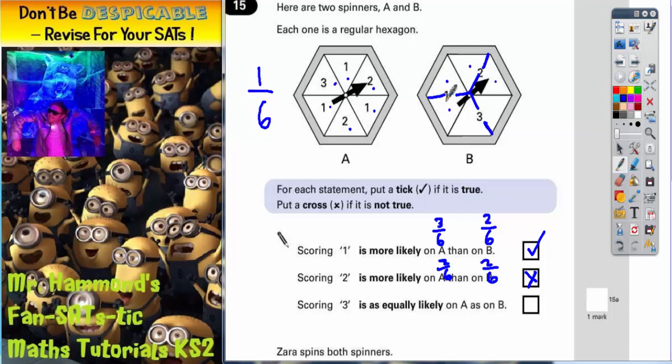there is only one three there, but remember it spans across two of the six sections. One, two. That three spans across both of those sections. So that is two out of the six sections. So spinner A was one out of six. Spinner B was two out of six.